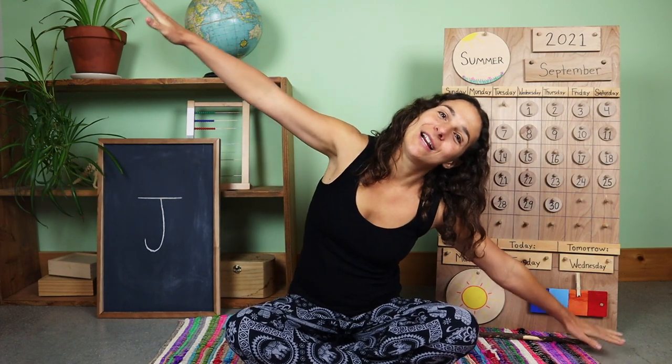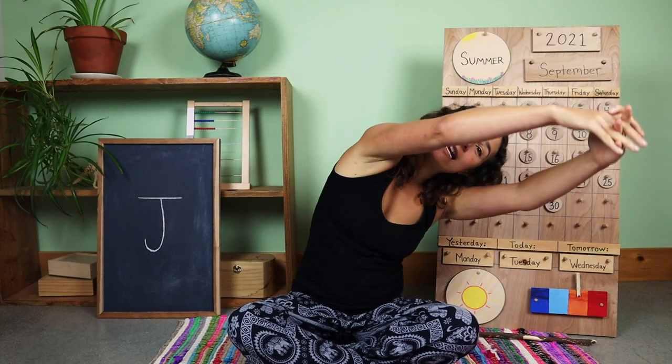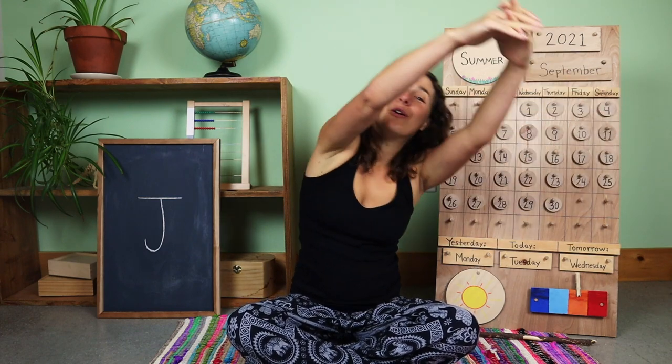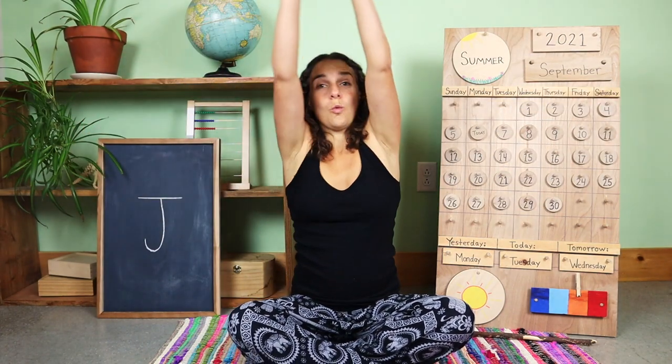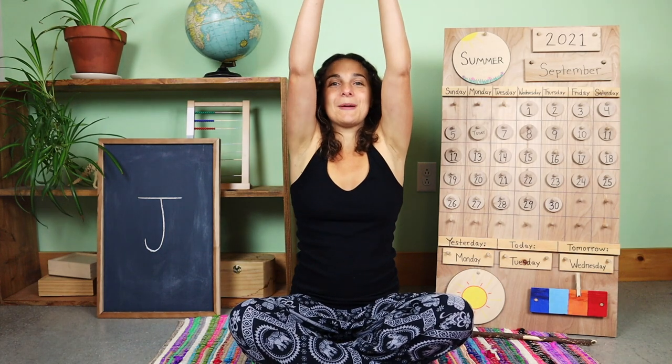We're going to stretch our arms out like airplane wings. We'll fly to one side, over to the other side, fly back to the middle, big stretch out in front. Now take the circle up over your head. We'll stretch on this side, over to the other side, one last time up at the top.